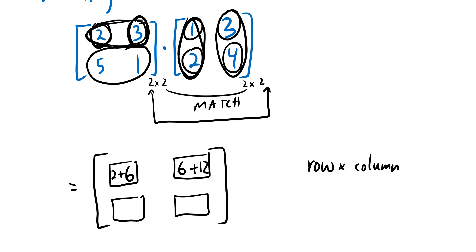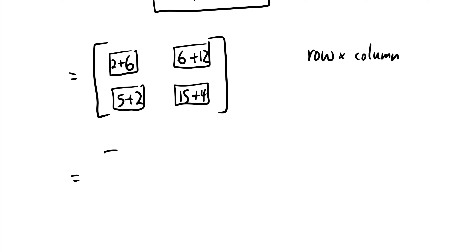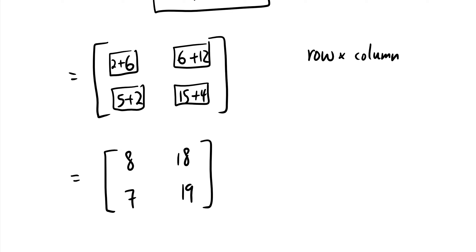Now take the second row and do the same thing — multiply by the first column: 5 times 1 is 5, and 1 times 2 is 2, giving 7. Then multiply the second row by the second column: 5 times 3 is 15, and 1 times 4 is 4, giving 19. The final result is the 2×2 matrix [8, 18; 7, 19].